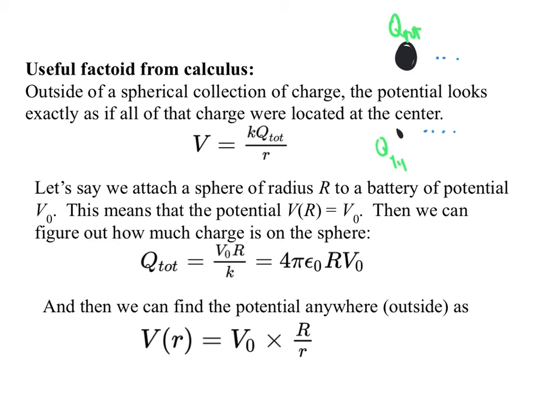If we attach the sphere of radius R to a battery with known potential V0, meaning that the potential at the surface is V0, then we can figure out how much charge must be on the sphere by just inverting this thing, saying when R equals big R, V should equal V0, and we find that Q total is V0 over R over K, or 4 pi epsilon naught R V0, and then we can plug that back into here and find the potential anywhere to be the potential on the sphere times the radius of the sphere over how far we are.